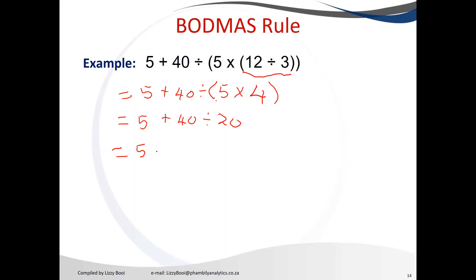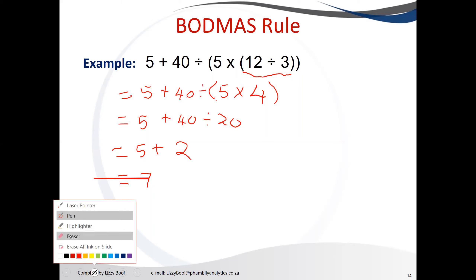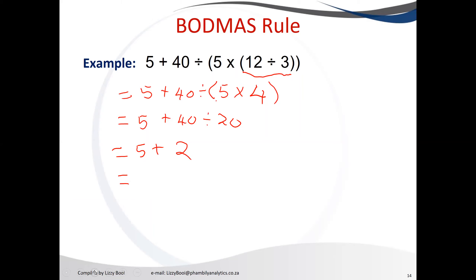Solving the division first: 40 divided by 20 equals 2. Then we have 5 plus 2, which equals 7. So the full equation — 5 plus 40 divided by, into bracket, 5 times, into bracket, 12 divided by 3, close bracket, close bracket — equals 7.